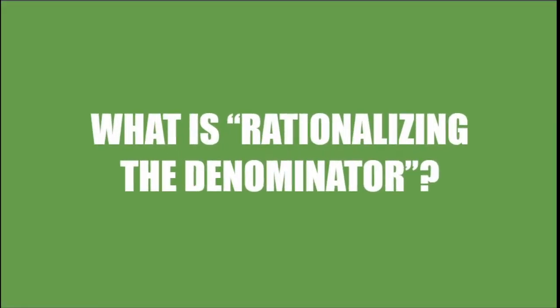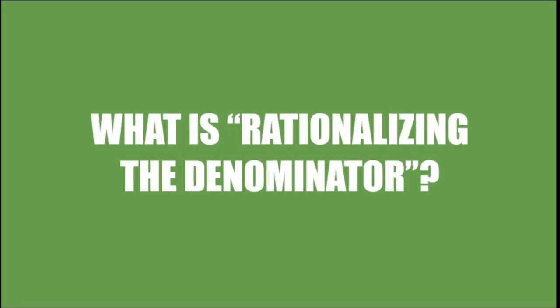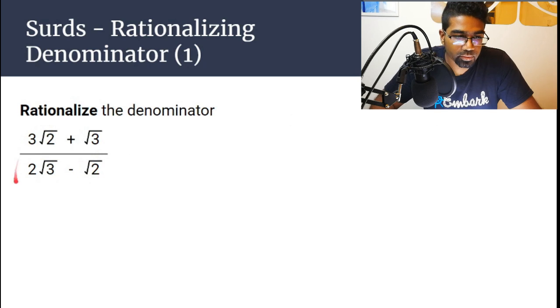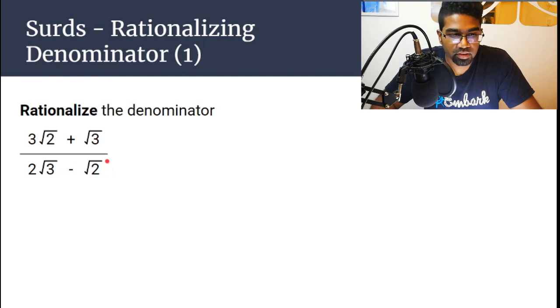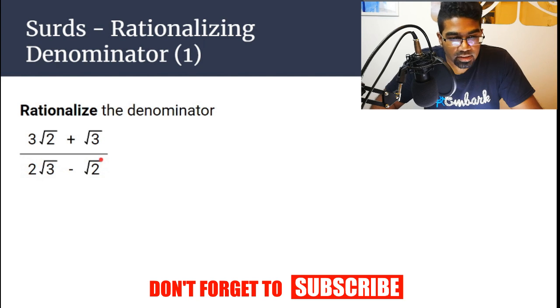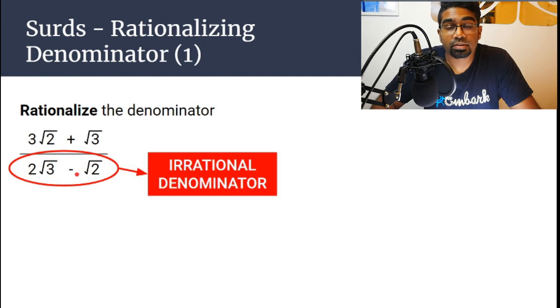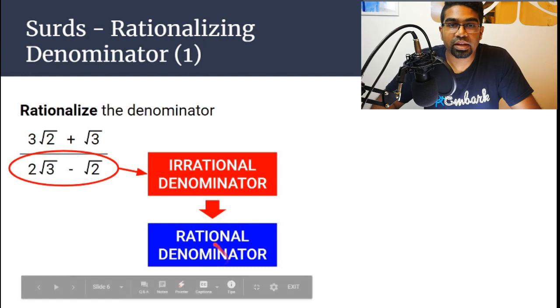Before we get into the question, let's think about what rationalizing the denominator actually means. When we have a fraction that has a surd as a denominator, or an expression of a surd like 2√3 minus √2, those are irrational numbers, so the expression will also be irrational. Rationalizing the denominator simply means making that irrational expression into a rational number.